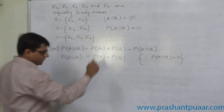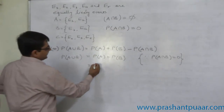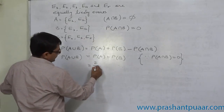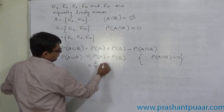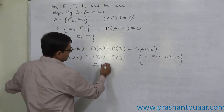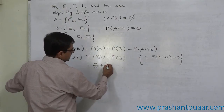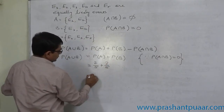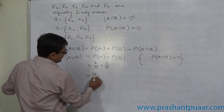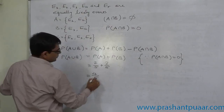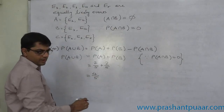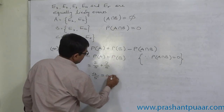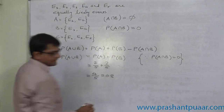Now, what was P of A? It was 2 by 5. What was P of B? Again, 2 by 5. So P of A union B comes to 4 by 5, or 0.8.